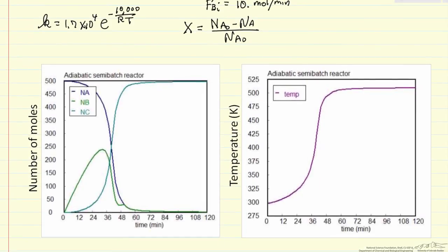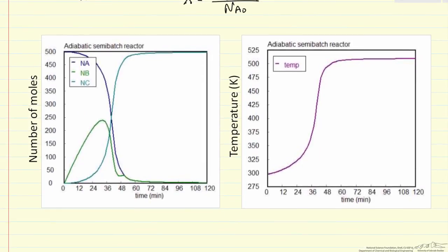Here is the output from the polymath program that solves the differential equations. Number of moles of A decreases continuously. The number of moles of B increases as we're adding B, but then as the rate accelerates, the number of moles decreases, and then at this point we stop adding B. This is the number of moles of C. The temperature increases because it's exothermic as the reaction proceeds and it's adiabatic. The temperature goes up, so the rate accelerates, and therefore the number of moles of A and B start dropping dramatically when the temperature is increasing.